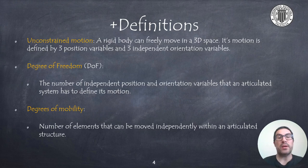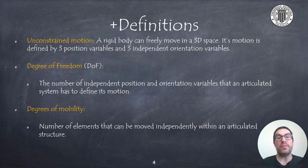So we know that unconstrained motion of a rigid body in 3D space uses three position variables and three independent orientation variables. There are two concepts that are widely used in robotics: the degrees of freedom and degrees of mobility of an articulated system. The degrees of freedom are the numbers of position and orientation variables that define the motion of an articulated system.